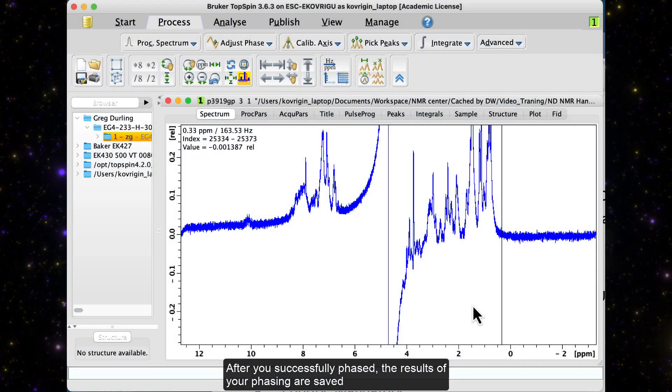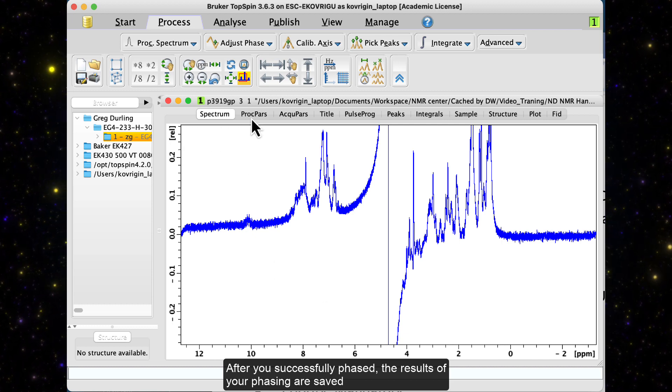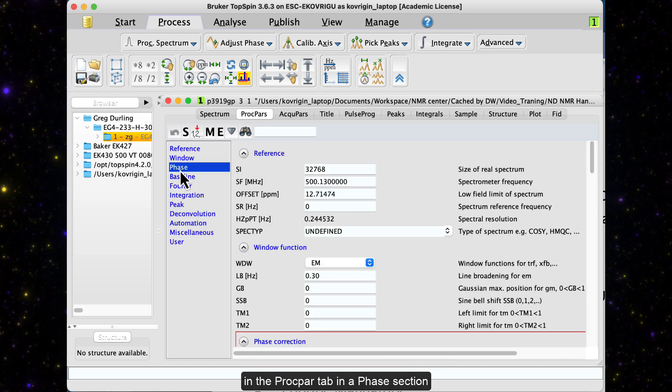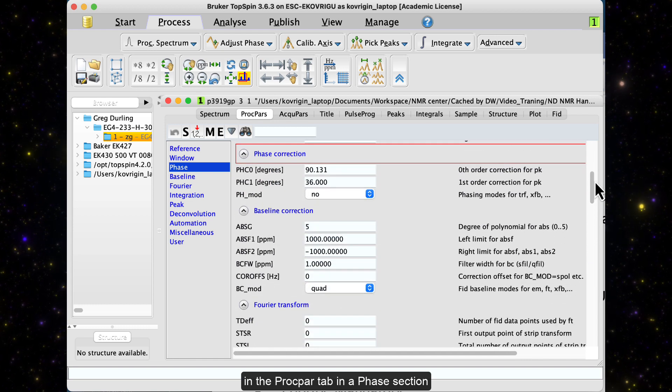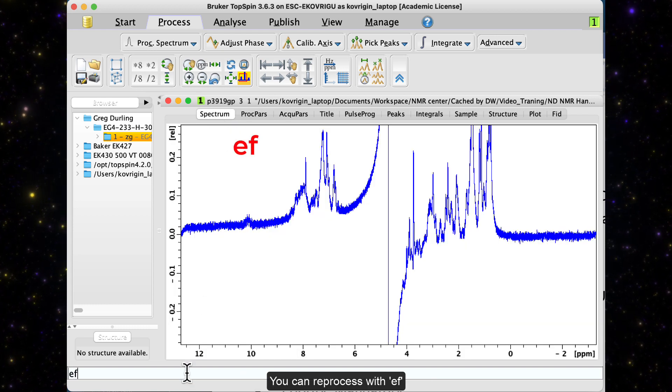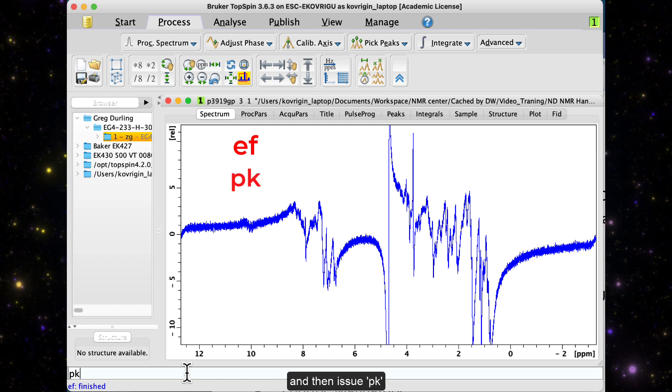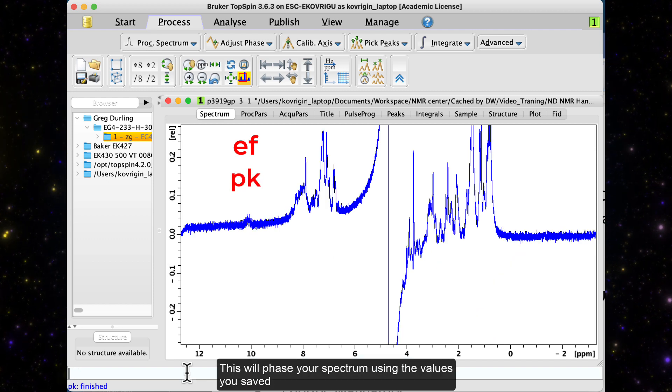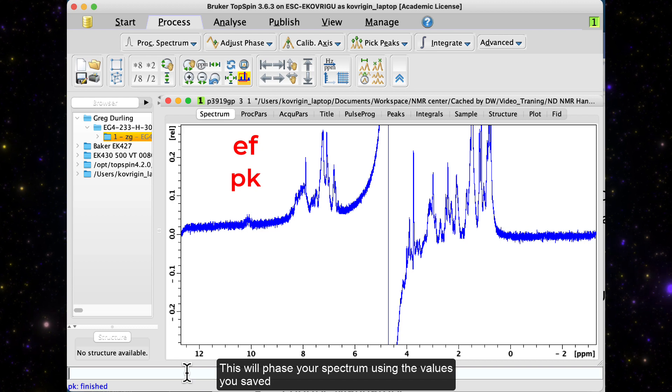After you successfully phased, the results of your phasing are saved in the PROCPAR tab in a phase section. You can reprocess now with EF and then issue PK. This will phase your spectrum using the values that you saved.